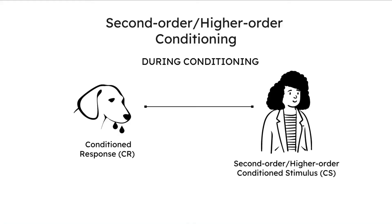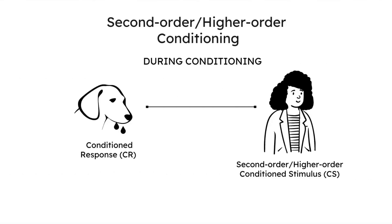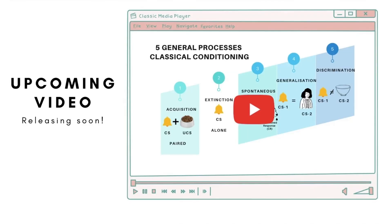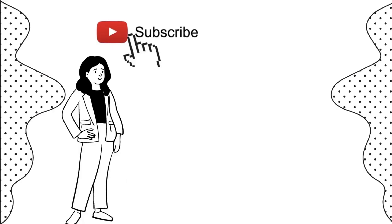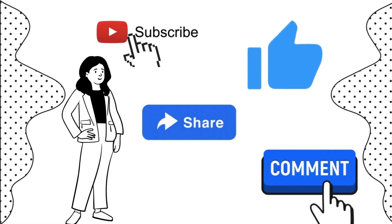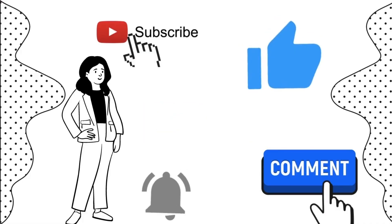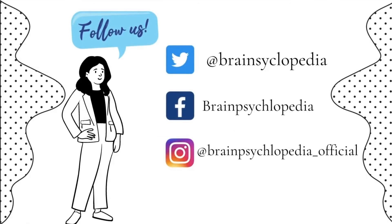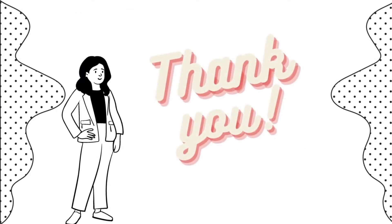Generally, it is difficult to achieve anything above the second-order or higher-order level of conditioning. That is the end of today's video. Please check our upcoming video releasing soon this week on the topic of five general processes or stages in classical conditioning — the link will be available in the description box below. If you found value in today's video, please subscribe to our channel, leave a like, share it with someone who will benefit, and leave us a comment. Don't forget to press the bell icon to stay updated on future uploads. Follow us on Twitter, Facebook, and Instagram. Thank you very much for your attention — see you in our next video.